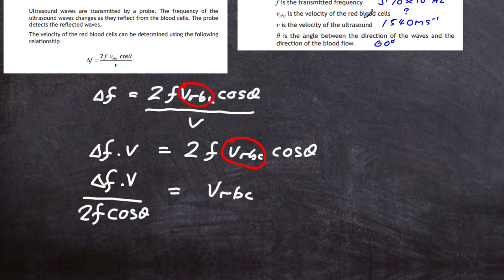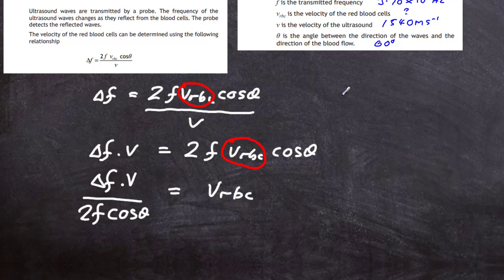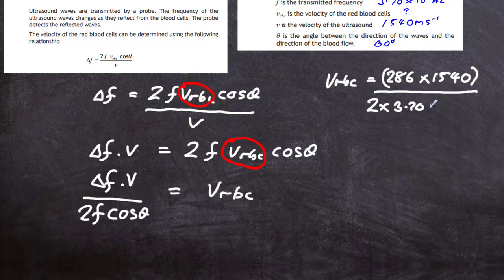V_RBC equals delta F which was 286 multiplied by V which was 1540 in a bracket, divided by 2 times the frequency of the ultrasound, 3.70 times 10 to the power of 6, multiplied by cos of 60 degrees. That's all my numbers in.